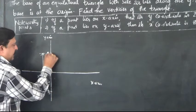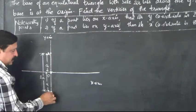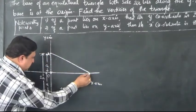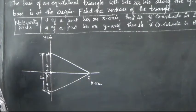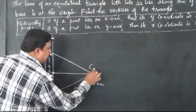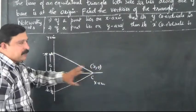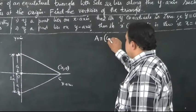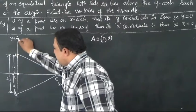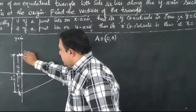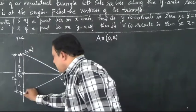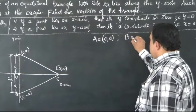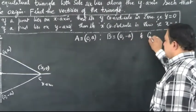We have regarded AB as the base of the triangle, and the third vertex C lies along the x-axis, so we take C as (x, 0) since its y-coordinate is 0. The coordinates of A are (0, a) because A is on the y-axis at a distance a from the origin. Similarly, the coordinates of B are (0, −a). So A is (0, a), B is (0, −a), and C is (x, 0).